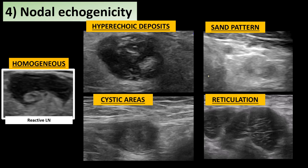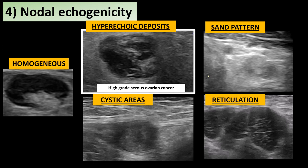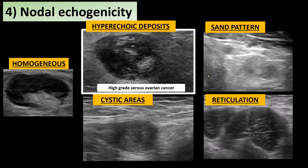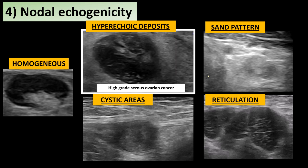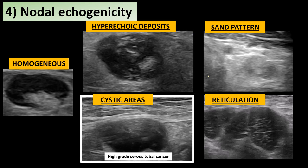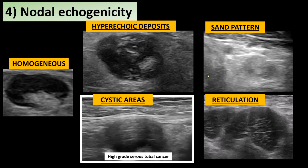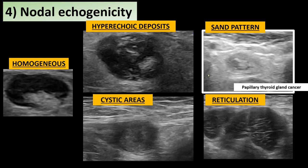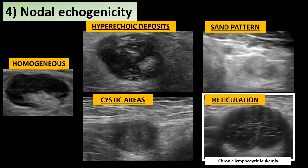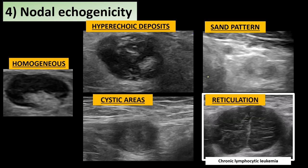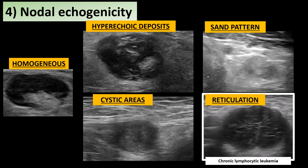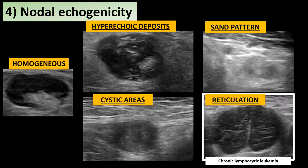The homogeneous lymph node in this clip is completely benign. Hypoechogenic deposits are often present in metastatic lymph nodes from serous ovarian cancer, usually low grade, but hyperechogenic deposits can also be found in high-grade serous ovarian cancer. Cystic areas are related to necrotic processes and malignant infiltration, as in this metastatic lymph node from high-grade serous tubal cancer. The sand pattern can be found in papillary cancer — this is a case of a metastatic lymph node from thyroid gland cancer. In a patient with chronic lymphatic leukemia, the reticulation pattern is clearly visible, with a very tiny medulla compressed by the completely infiltrated cortex — this is the lit sign, characteristic of hemato-oncological malignant disease.